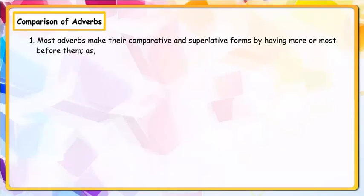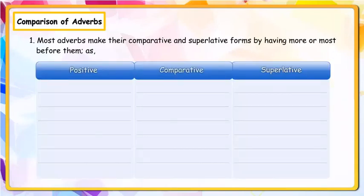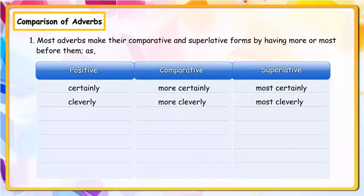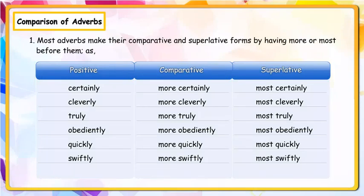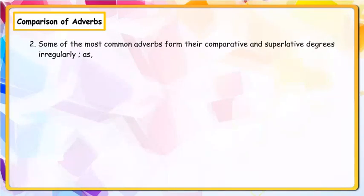As a general rule, the word 'only' should be placed immediately before the word it modifies. Example: I solved only two sums / Only I solved two sums. Comparison of adverbs: Most adverbs make their comparative and superlative forms by having 'more' or 'most' before them. Examples — Certainly / More certainly / Most certainly; Cleverly / More cleverly / Most cleverly; Truly / More truly / Most truly; Obediently / More obediently / Most obediently; Quickly / More quickly / Most quickly; Swiftly / More swiftly / Most swiftly; Skillfully / More skillfully / Most skillfully.